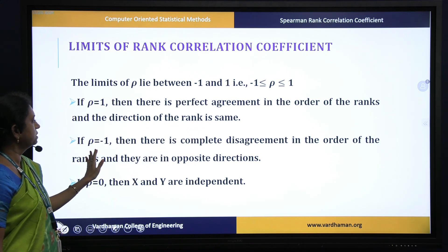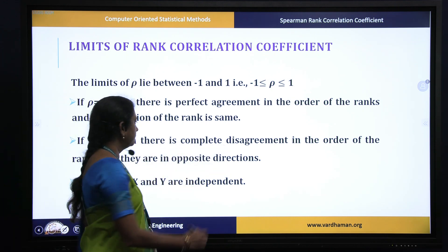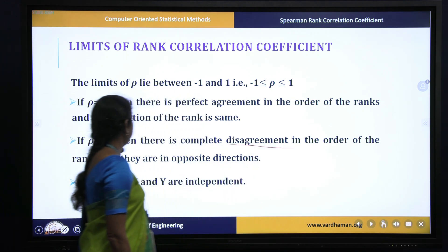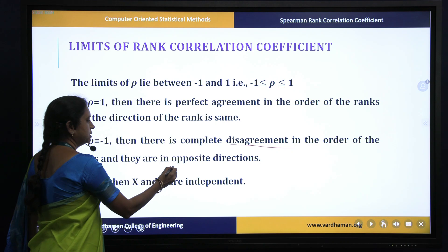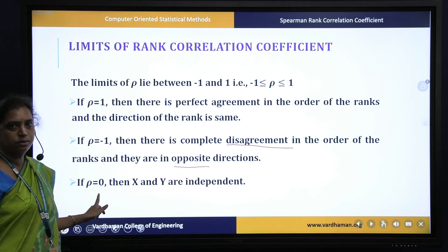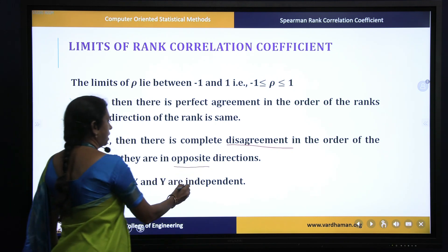If rho is minus 1, then there is a complete disagreement in the order of the rank and they are in opposite direction. If rho is equal to 0, then x and y are uncorrelated.